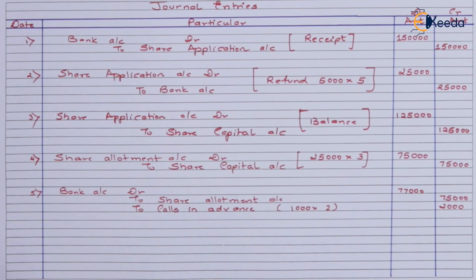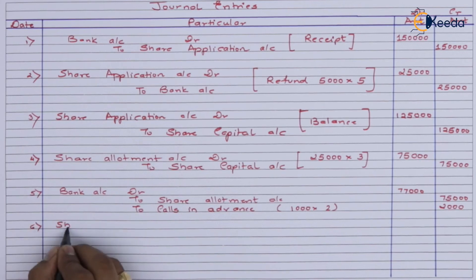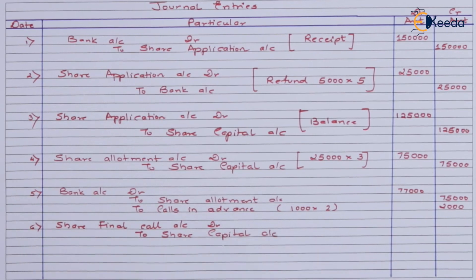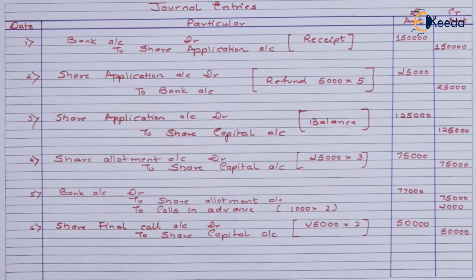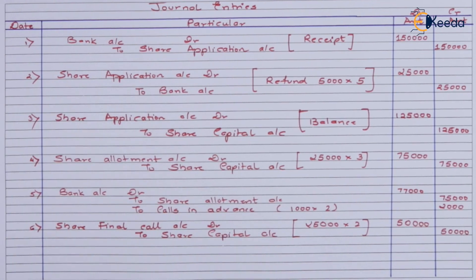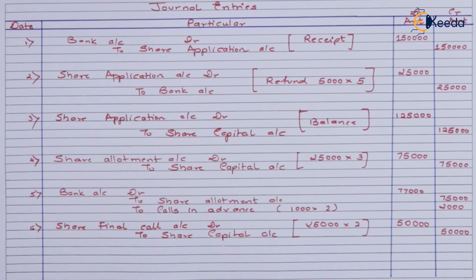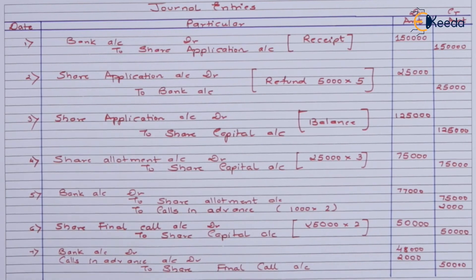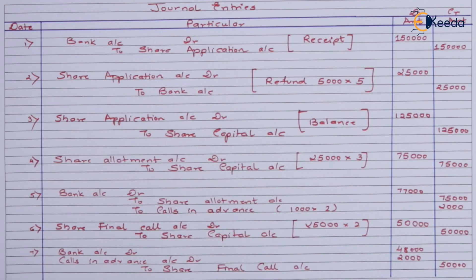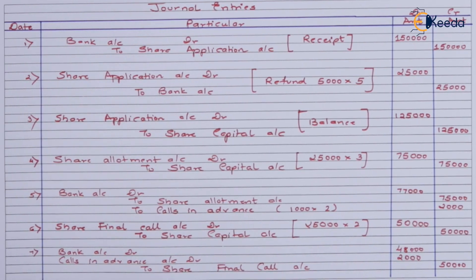The last entry refers to the final call due and receipt. For the final call, we expect 50,000. Share final call account is debited and share capital is credited. However, when it comes to the receipt entry, we receive only 48,000 since 2,000 was already received as calls in advance. So bank account is debited with 48,000, calls in advance is debited with 2,000, and share final call is credited with 50,000.